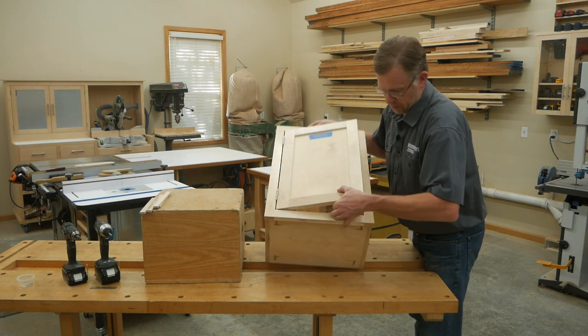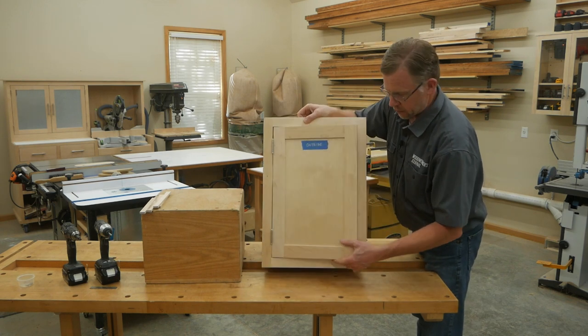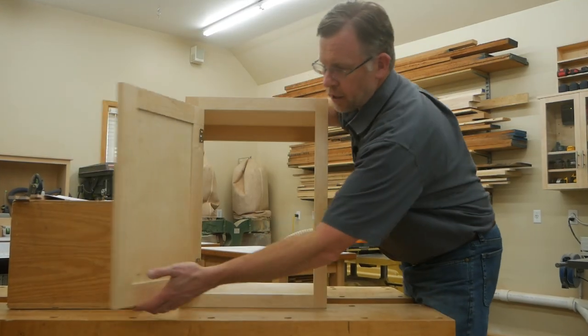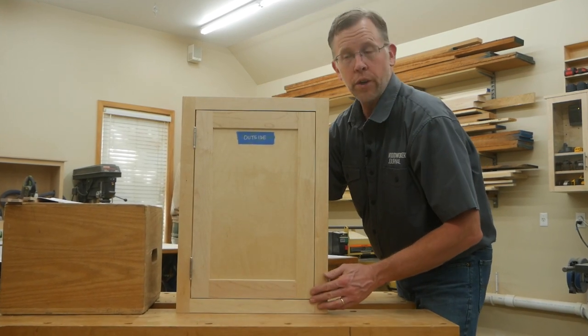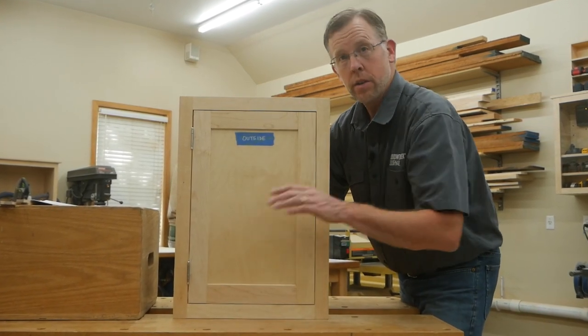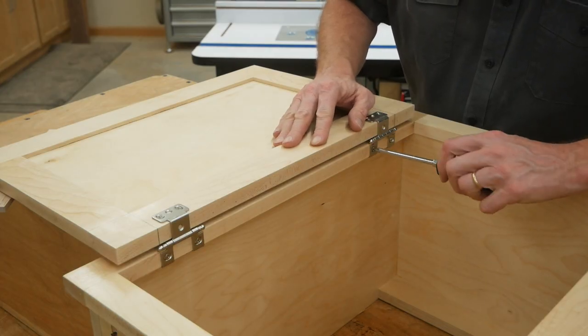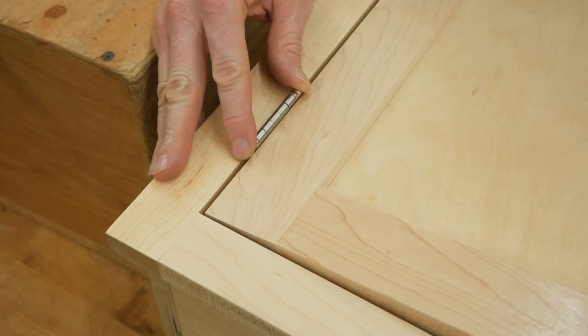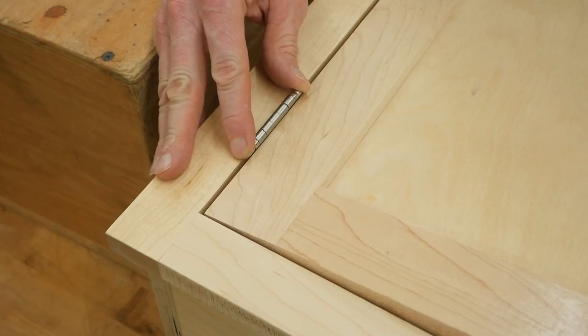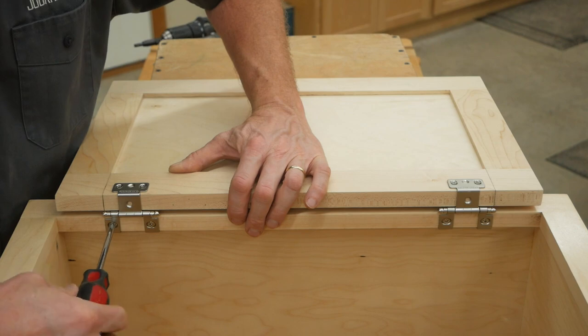Now stand the cabinet up carefully so you can check for door swing. Hopefully it closes with an even reveal all the way around. But if it doesn't, you can make adjustments. Do that by loosening the hinge screws slightly and moving the door up or down and horizontally to improve the fit, then retighten the screws.